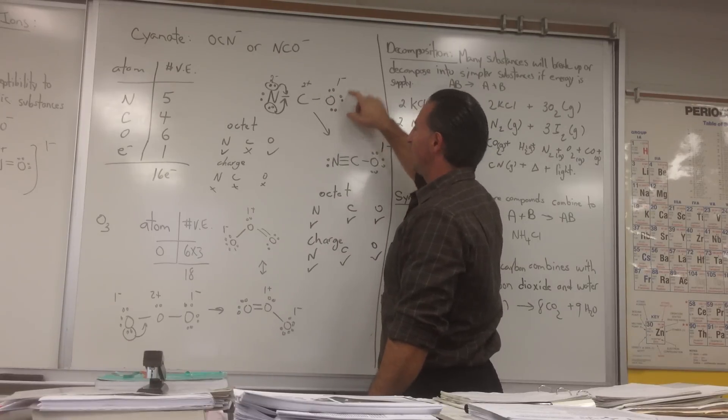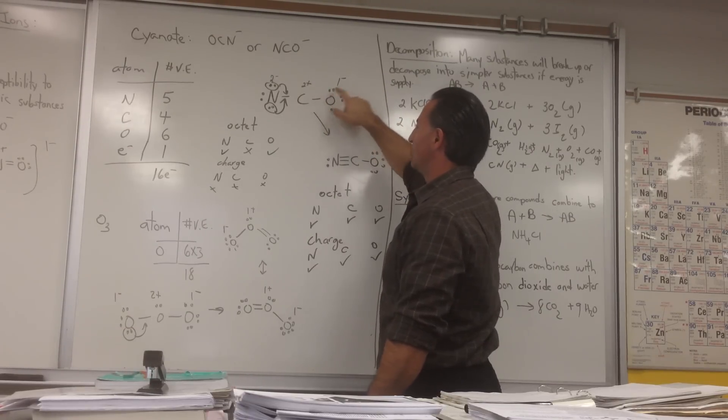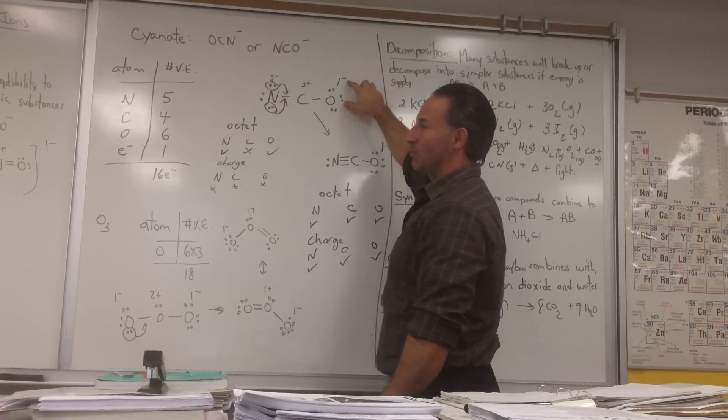Oxygen wants to possess 6 electrons, it actually has 7 if you count this bonding pair as 1, so 2, 4, 6, plus 1, 7, wants 6, so it has an extra 1.